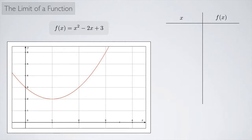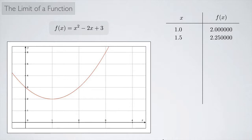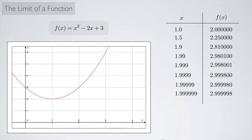On the x-axis, I'm going to pick values of x that slowly approach 2. We know the value of the function at 2 is 3, so we should expect that as we pick values closer and closer to 2, the function should get closer and closer to 3. If x = 1, f(x) = 2. If x = 1.5, f(x) = 2.25. At x = 1.9, f(x) = 2.81. As we get closer and closer to 2, the value of the function gets closer and closer to 3.